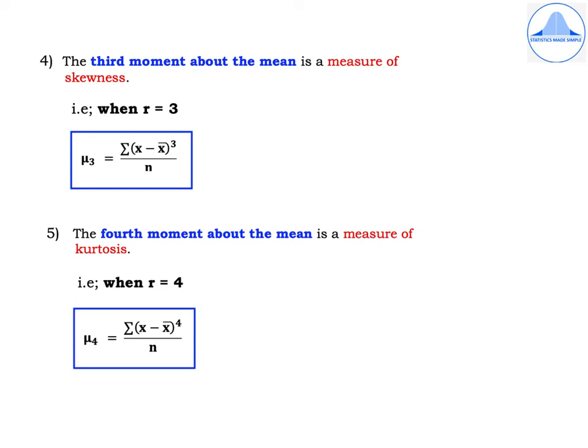The fourth moment about the mean is a measure of kurtosis. When r = 4, μ4 = Σ(x − x̄)^4 / n. To summarize: the first moment about the mean is 0, the first moment about 0 is the mean, μ2 = σ² (variance), μ3 is a measure of skewness, and μ4 is a measure of kurtosis.